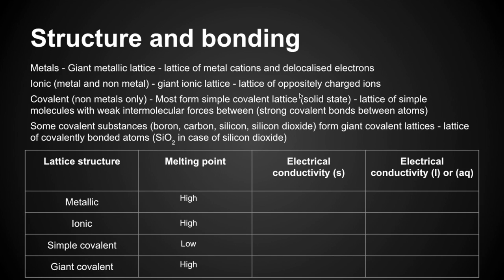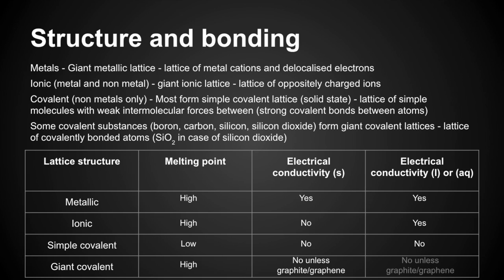For electrical conductivity in the solid state: metals — yes; ionic — no; simple covalent — no; giant covalent — no, unless it's graphite or graphene. In liquid or aqueous state: metallic — yes; ionic — yes; simple covalent — no; giant covalent — no, unless graphite or graphene. The explanation for electrical conductivity comes down to whether the substance has freely moving charged particles.